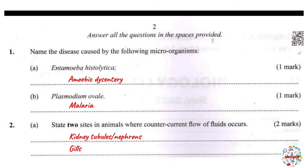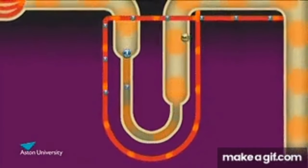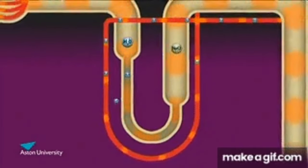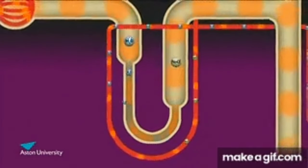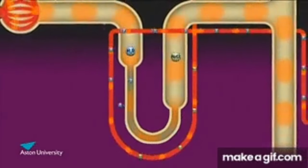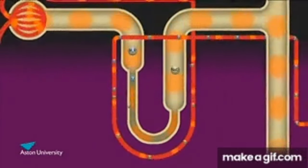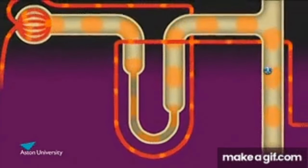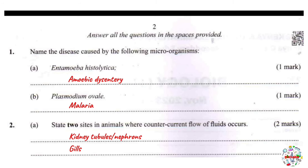Another example is found in the renal system of mammals. Within the nephrons of the kidneys, blood and the glomerular filtrate flow in opposite directions — especially seen in the loop of Henle. This system ensures maximum reabsorption of water and mineral salts. A third example is the placenta.